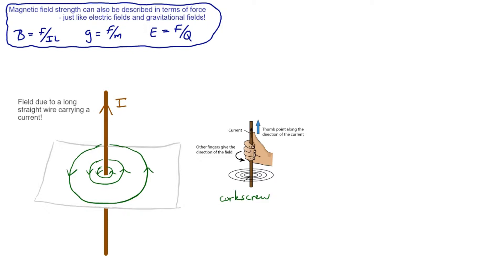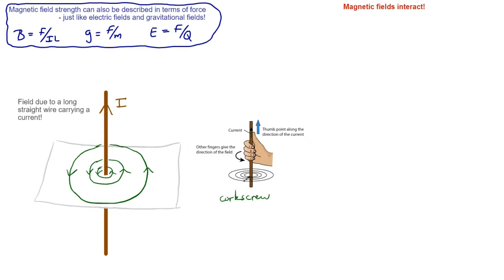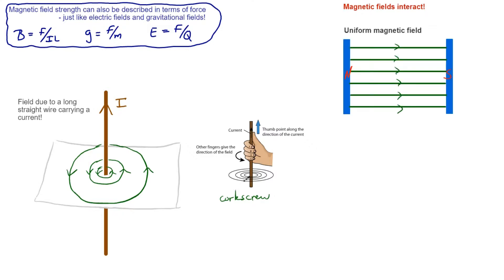This is important because magnetic fields interact with each other. For example, if we have a uniform magnetic field — which we might create using a horseshoe magnet, or two magnets with north pole facing the south pole of another — we get a nice region of uniform magnetic field.